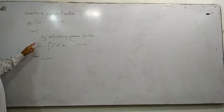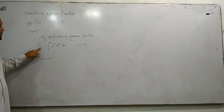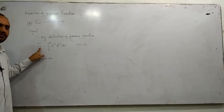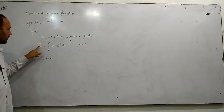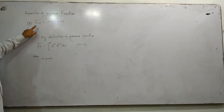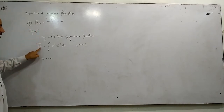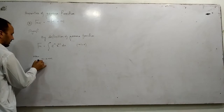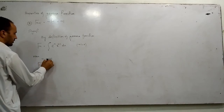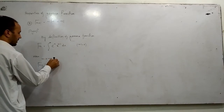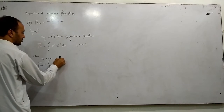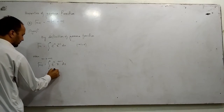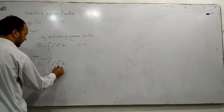As stated at the beginning of the lecture, whatever value we have in gamma, we replace n with that value. So if we have n plus 1, we write n plus 1 in the exponent as well. Therefore, gamma(n+1) equals the integral from 0 to infinity of e to the power minus x, times x to the power n plus 1 minus 1, dx, which simplifies to the integral from 0 to infinity of e to the power minus x, times x to the power n, dx.